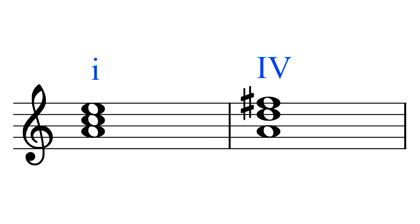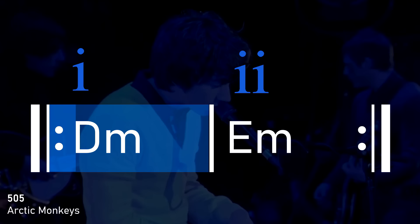Of course, this chord progression isn't the only way to give a song that Dorian sound. For example, instead of using the major version of the IV chord alongside the minor tonic chord, we could instead use a minor chord built on the second degree of the scale. This chord also features Dorian's distinctive raised sixth. It's the raised sixth that makes it a minor chord, rather than the diminished chord that we would get if we were in natural minor.